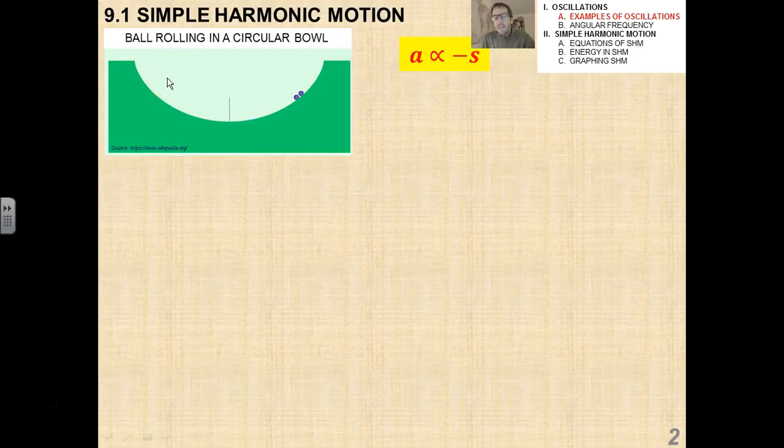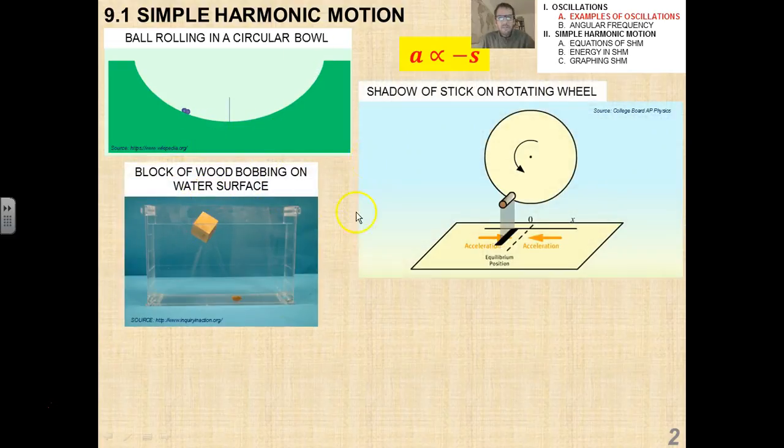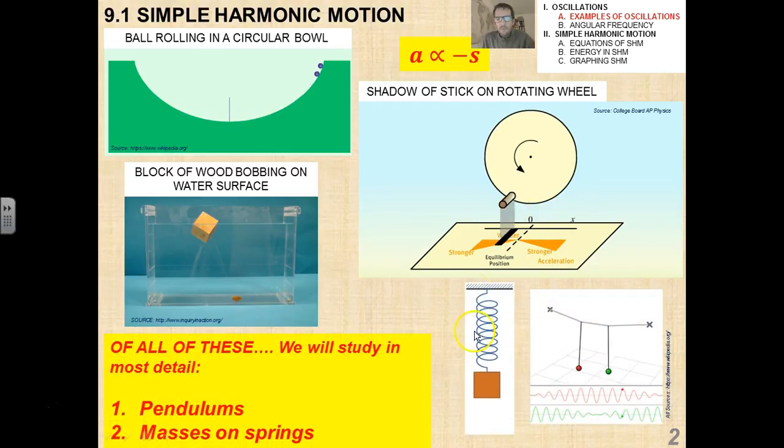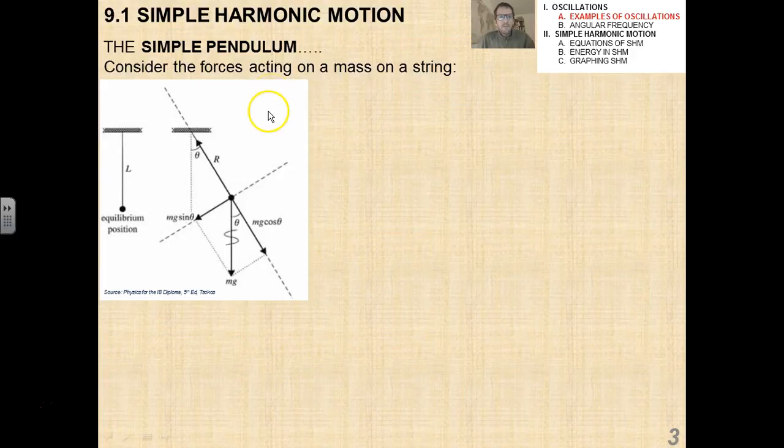Now, in a purely physics realm, we've talked about an example of an oscillation being balls rolling in a circular bowl, a block of wood bobbing on a water surface. And most interestingly, in my opinion, the idea of a stick that's glued to a rotating wheel with a light shining down on it. And if you consider the motion of the shadow going back and forth, it turns out that that motion is simple harmonic. We'll do a little bit more with that. Now, of all of these, what we're going to study in the most detail, what you need to know, really be an expert on in terms of the IB, are pendulums and masses on springs. So I'm just going to do a little bit of review on pendulums and masses on springs in this video.